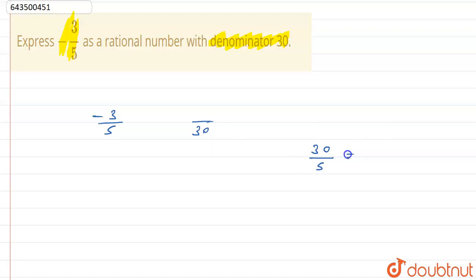So what we can do so that we get denominator as 30? We know that 30, if we divide 30 by 5, we get 6.